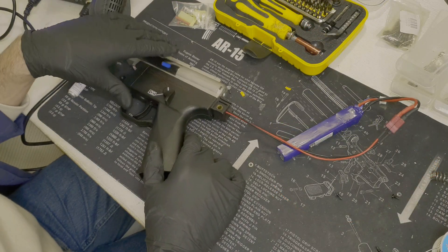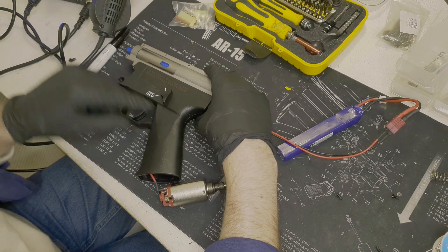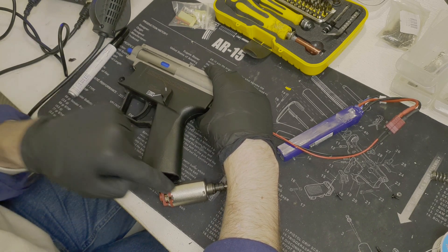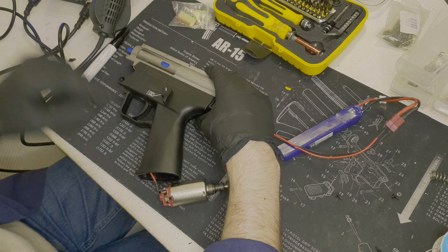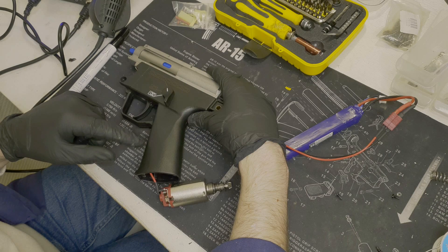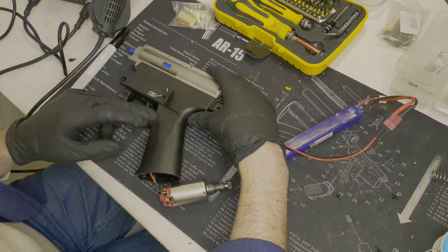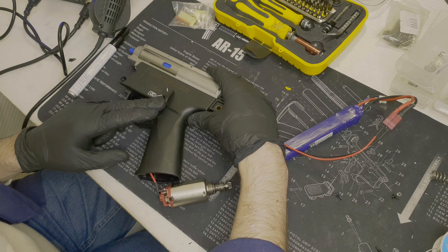We've installed the gearbox in the lower receiver. So we've installed the motor as well and also connected the battery. What you can do now is move the selector to see if it beeps when you move it from auto to semi.